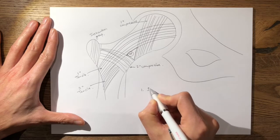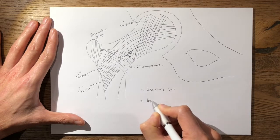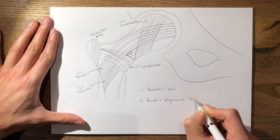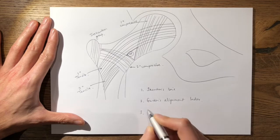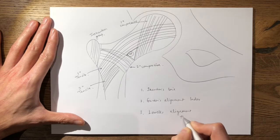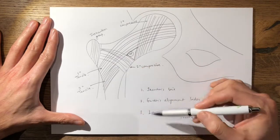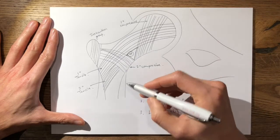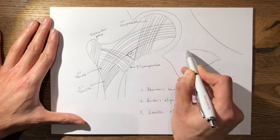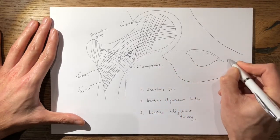And there are three radiographic parameters that I would tell the examiner. So firstly, I would use Shenton's line. Secondly, I would use the Garden's alignment index. And thirdly, I would use Lowell's alignment theory. So this is where you draw this diagram and show each of these three and how you'd use it to ensure an adequate reduction. So Shenton's line, everyone knows it's the medial calcar line here, which would form a continuous line with the inferior border of the superior pubic ramus. So that's Shenton's line here. So that's number one.